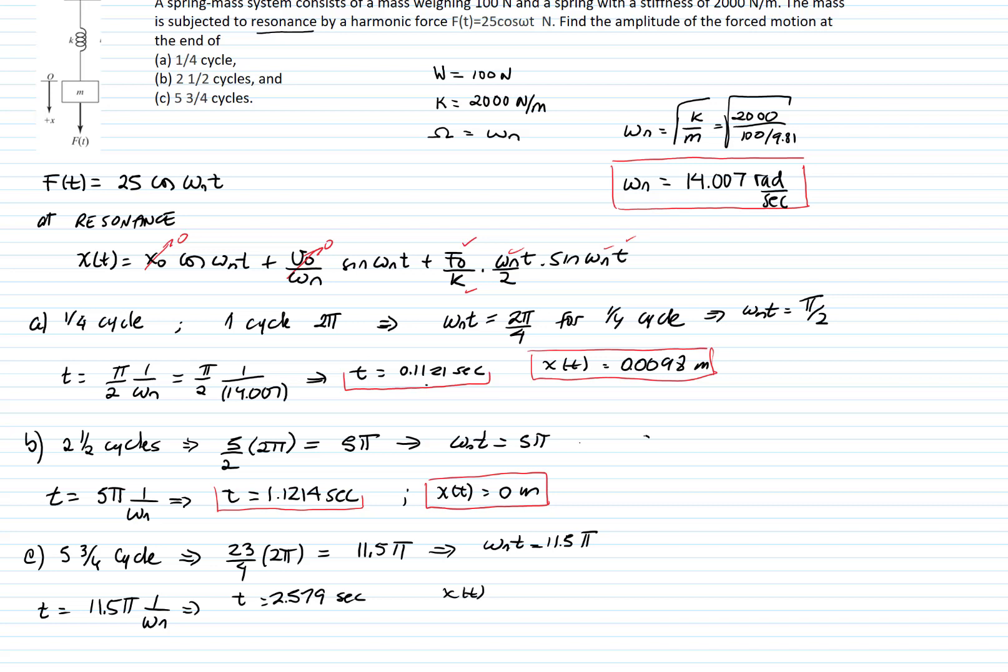If I plug that value of t into my response, I get an amplitude of negative 0.2259 meters.